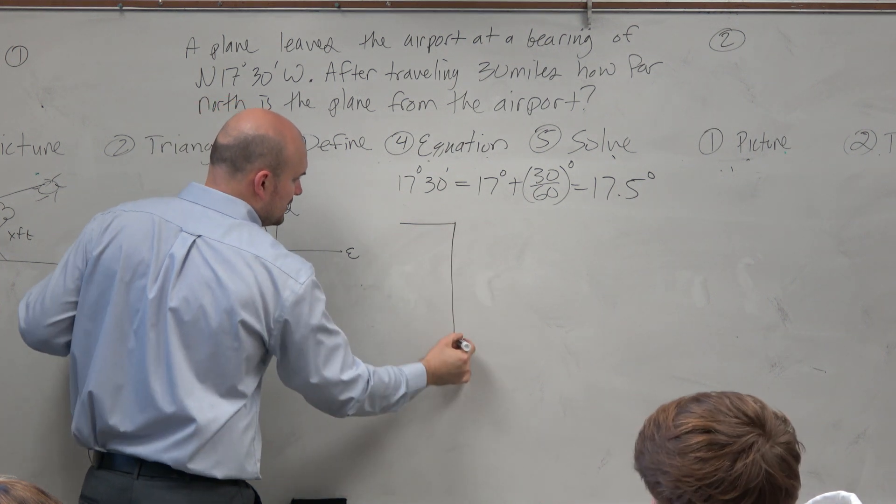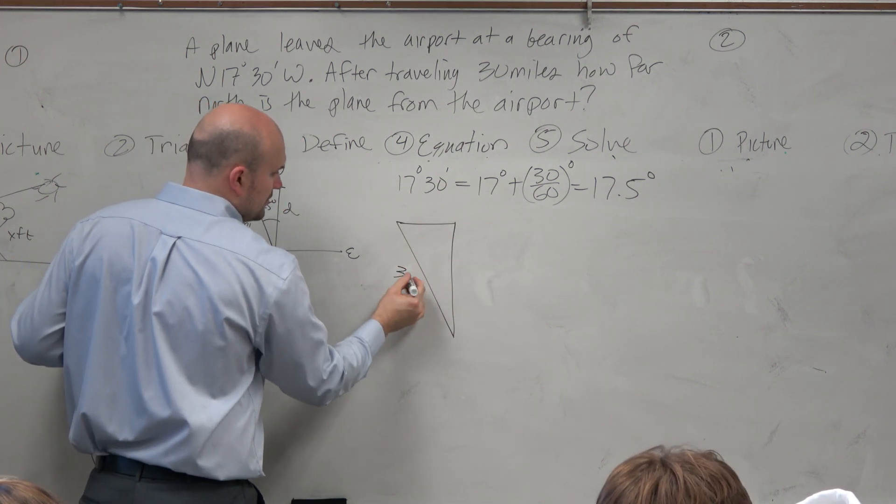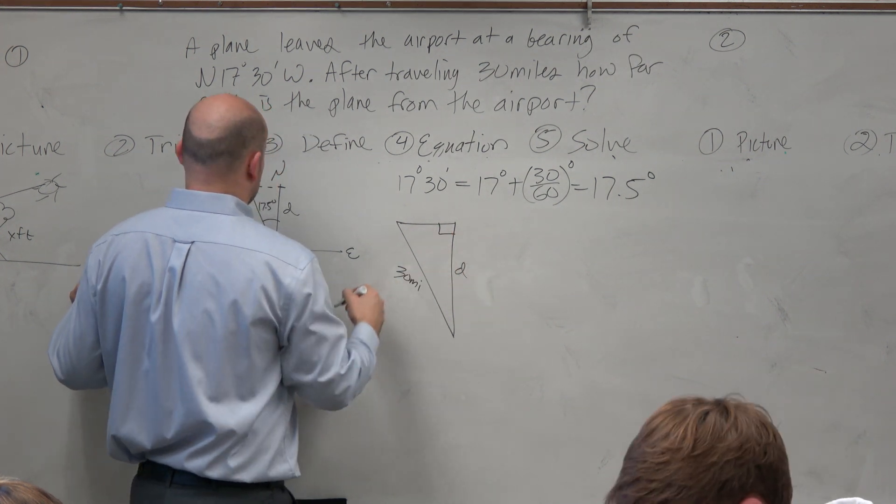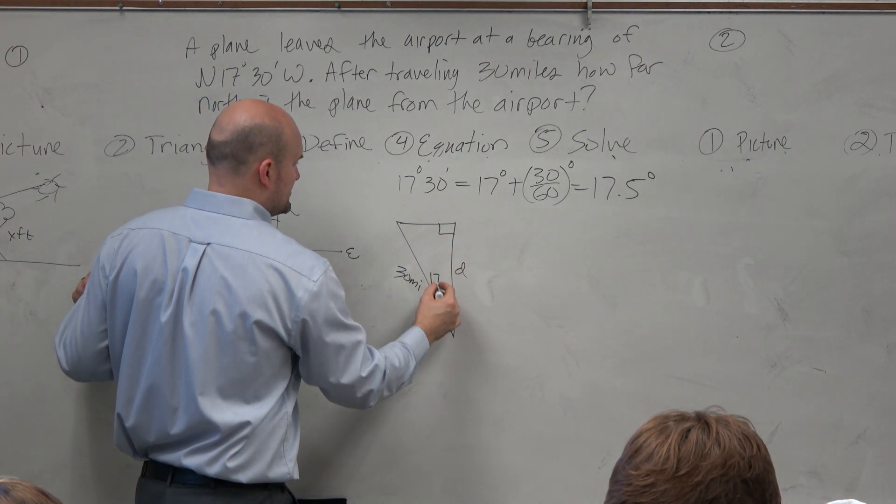So now there's our picture. Now let's kind of create a triangle here. A right triangle we know. 30 miles. Here's D. And this is 17.5.